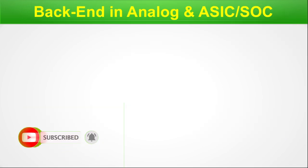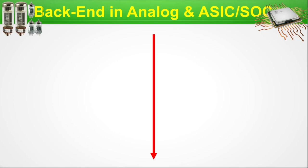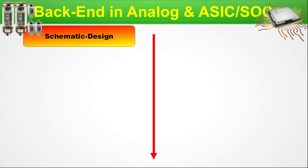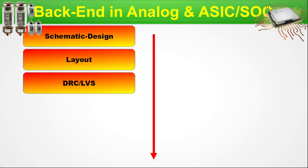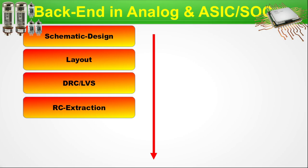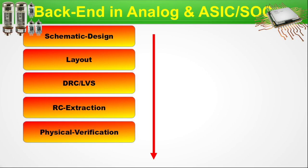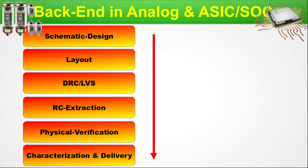In the back-end flow, the left-hand side is the IP or analog design part and the right-hand side is the SoC design flow. In analog or IP design: schematic design, then layout design using handcrafted layout, then DRC and LVS checks, then RC extraction, then physical verification of the RC-extracted netlist, and finally electrical characterization or delivery.